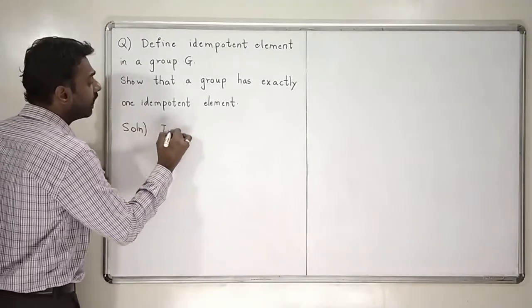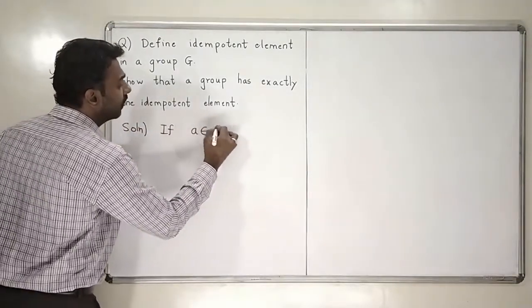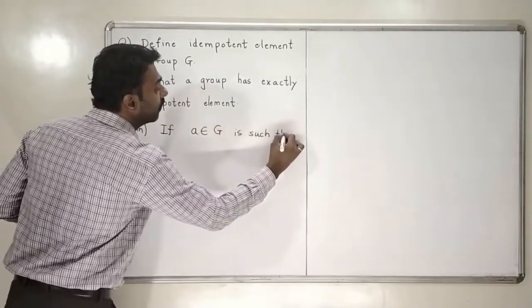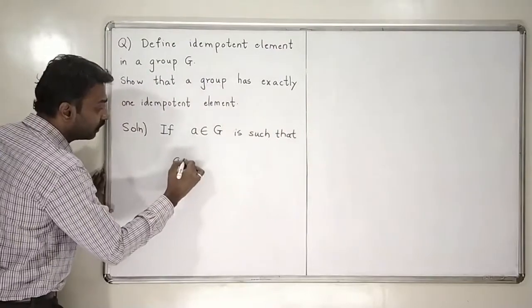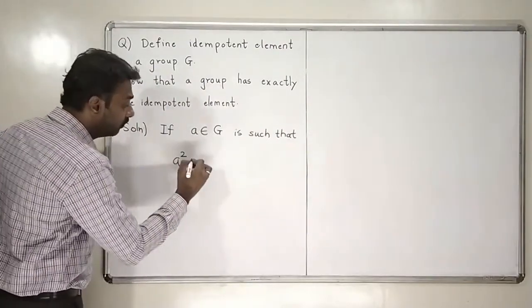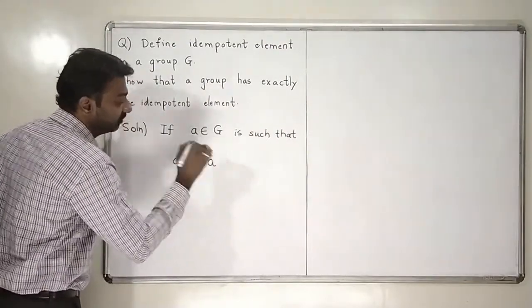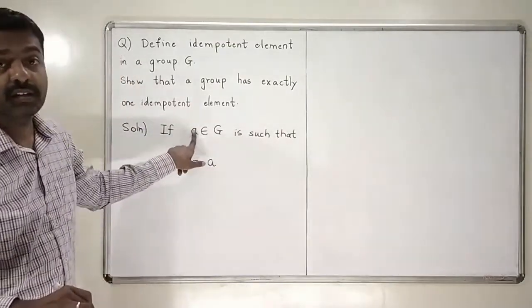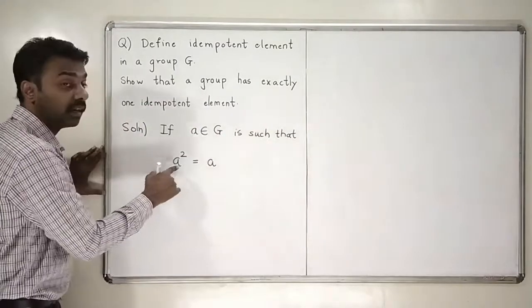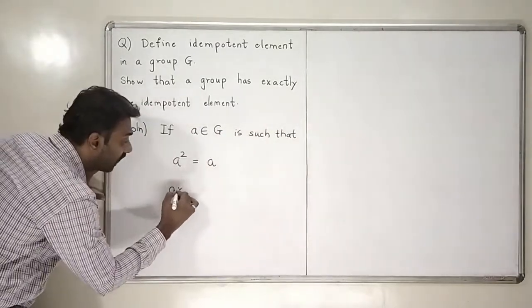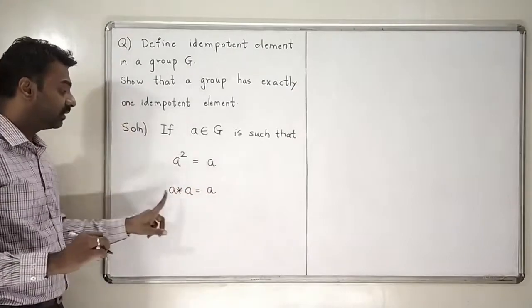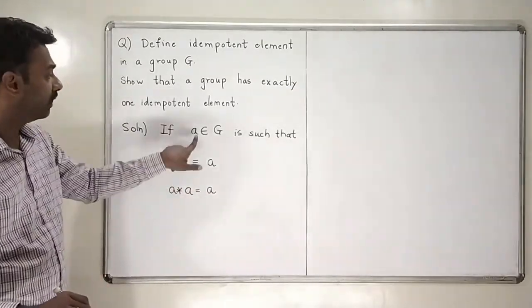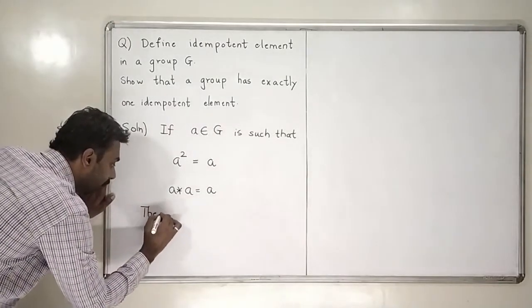If a in G is such that the square of that element, means a², will be equal to again a. If such thing happens, then I will say that this a is an idempotent element. What is a²? A² means a star a should be equal to a again. If such a thing happens, then this a is called as the idempotent element. Then a is idempotent.